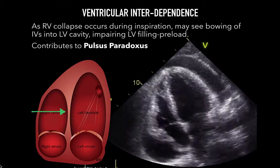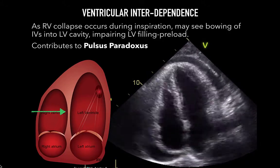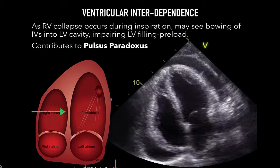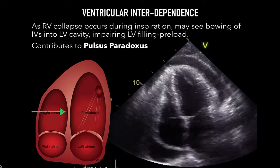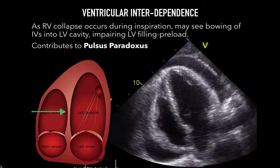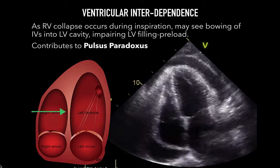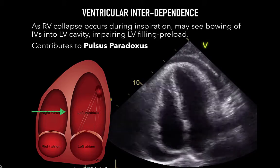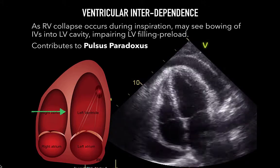Ventricular interdependence is one of the other features seen in tamponade — a normal process that is simply exacerbated by tamponade physiology. In general, you see a bowing of the interventricular septum into the LV during inspiration. In tamponade, it is exaggerated. During inspiration, there is increased venous return and filling of the right heart, while decreased pulmonary pressures lead to less forward flow to the left heart. The combination leads to increased pressure on the right compared to the left, and the septum bows. Upon expiration, the process is inverted, and all of this, while normal, is exacerbated by tamponade physiology, leading to what is called pulsus paradoxus.